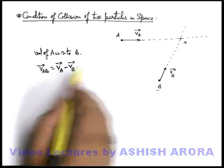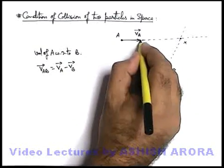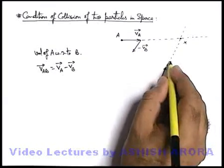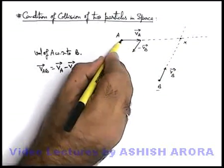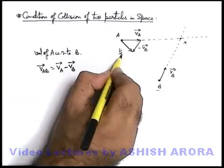If we vectorially calculate it, this is v_a vector, this is v_b vector, so minus v_b vector would be in this direction. This is minus v_b vector which is exactly opposite to v_b vector. So the velocity of A with respect to B we are getting in this direction.